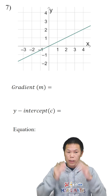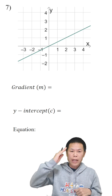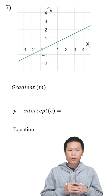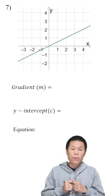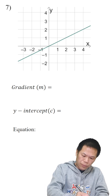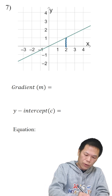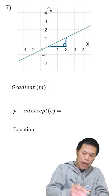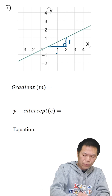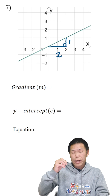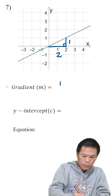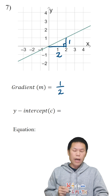We know that the gradient is positive because it's heading like this. So we just need to draw a triangle to find the gradient. We can draw a triangle like this. The rise is 1 and the run is 2, so the gradient is rise over run, which is 1 over 2. And it's positive.